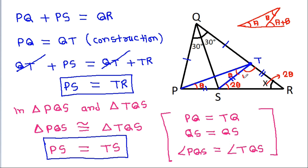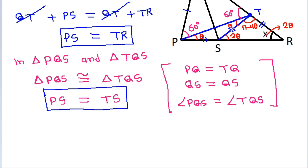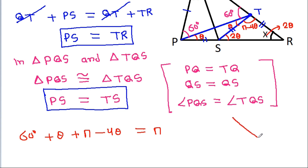And this angle will be pi minus 4 theta. Since pq is equal to qt, these two base angles will be equal. And since angle pqr is 30 plus 30, that is 60 degrees, triangle pqt is equilateral, so these two angles will be 60 degrees. Now, 60 degrees plus theta plus pi minus 4 theta equals pi, because on any straight line the angles sum to pi.